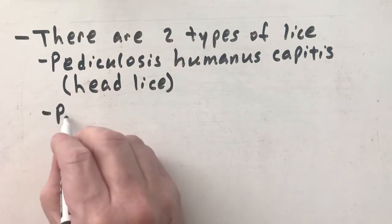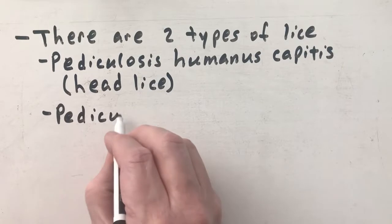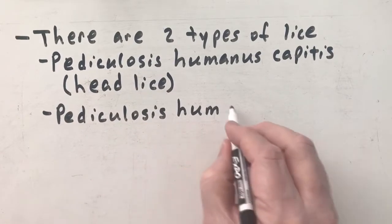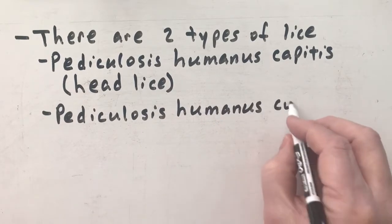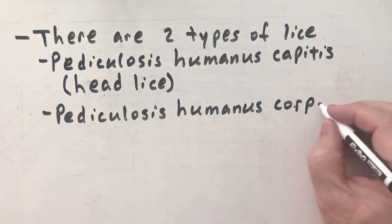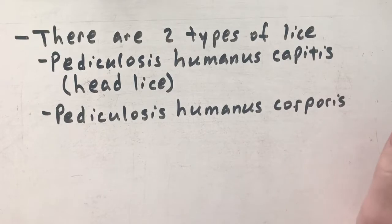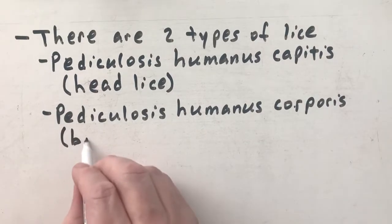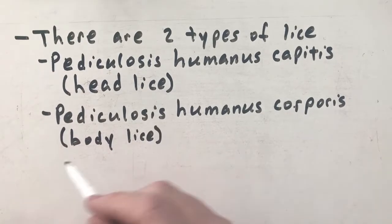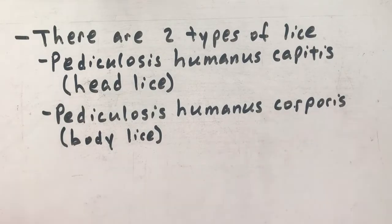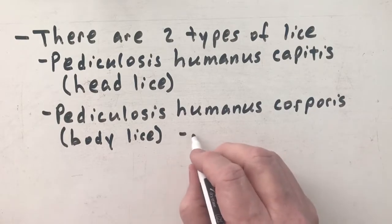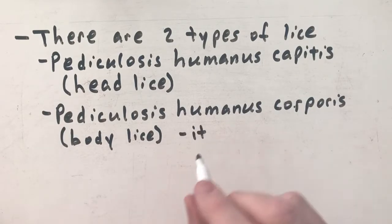The second type is Pediculosis humanus corporis, which is body lice. There are some other subtypes that can affect other parts of the body, but these are the two we're focusing on. Of these two, body lice is the one that can be harmful — it can actually be deadly — and I'm going to explain that in a minute.